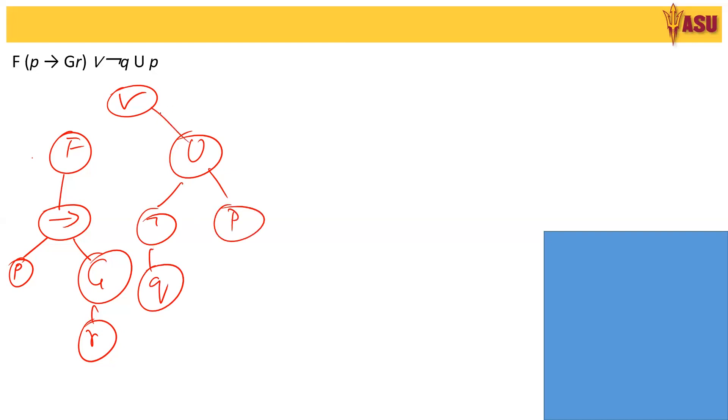This is very similar to what we had in propositional logic or predicate logic. So these are the parse tree for the given formula. Now, to look at the sub-formulas, first let's write out the leaves. So that is P, R, Q.